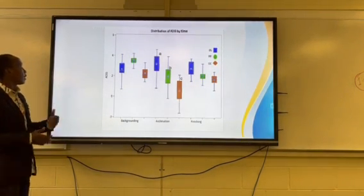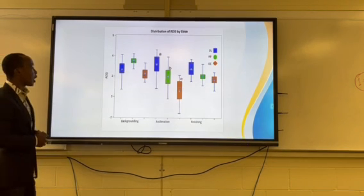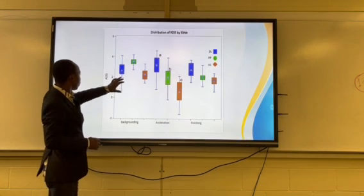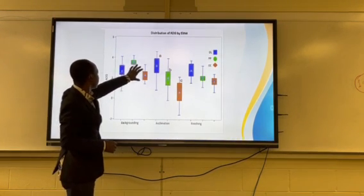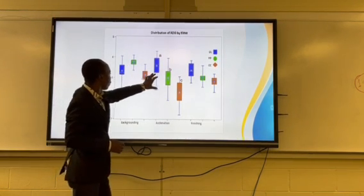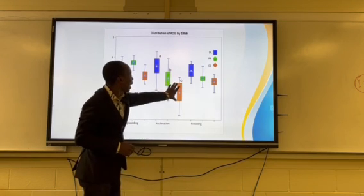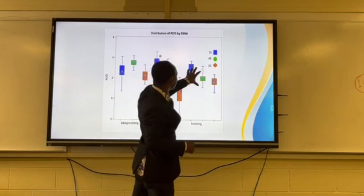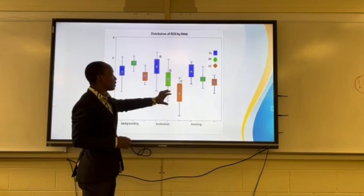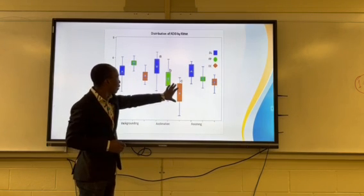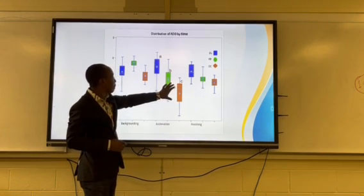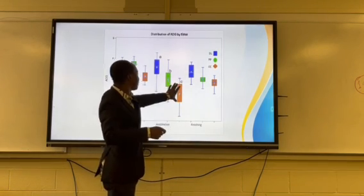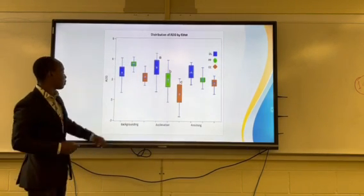There was a significant difference in average daily gain of calves across backgrounding systems by time. During weaning there was no significant difference, but during backgrounding the cover crop had the least average daily gain, and at finishing there was no significant difference. This low average daily gain for cover crops shows that the backgrounding system affects animal performance at that particular timeline.